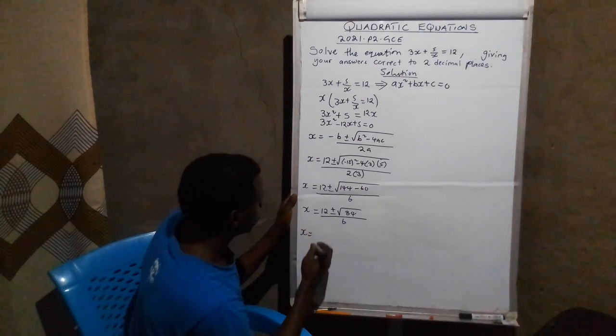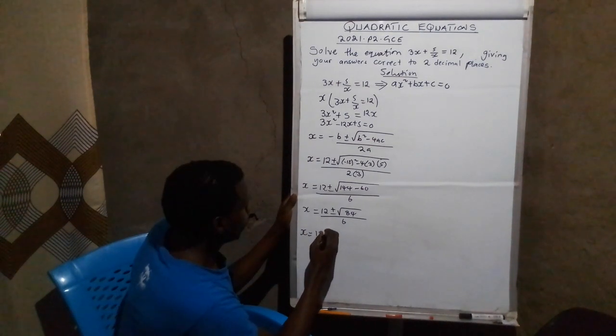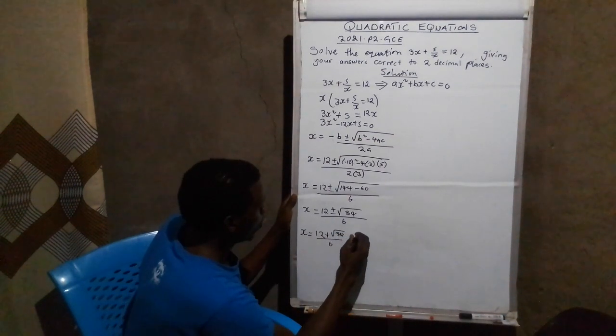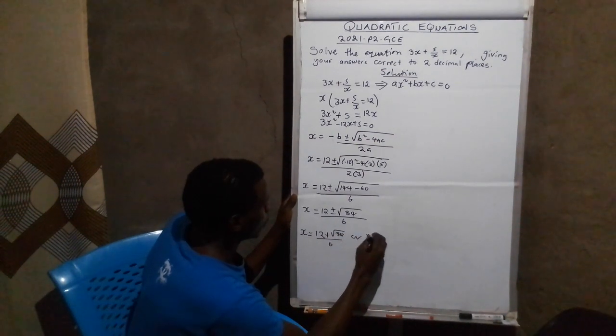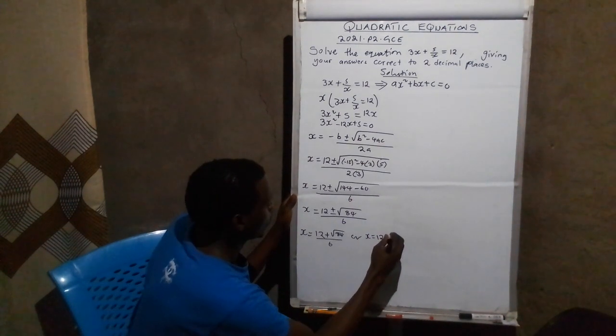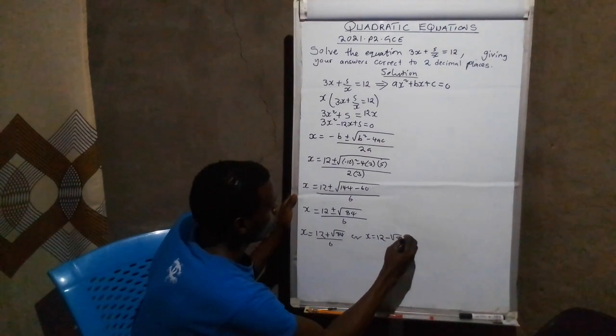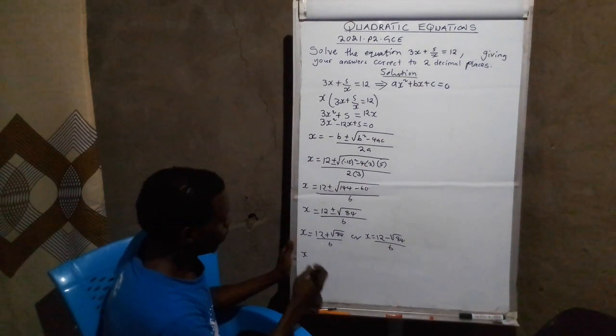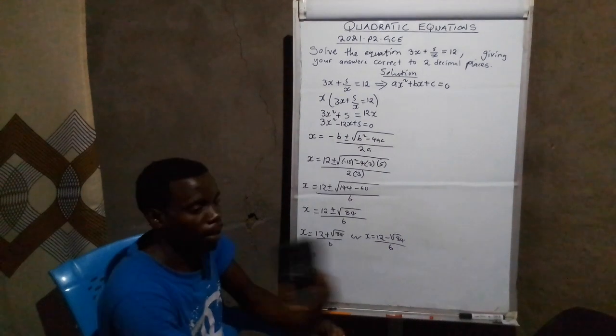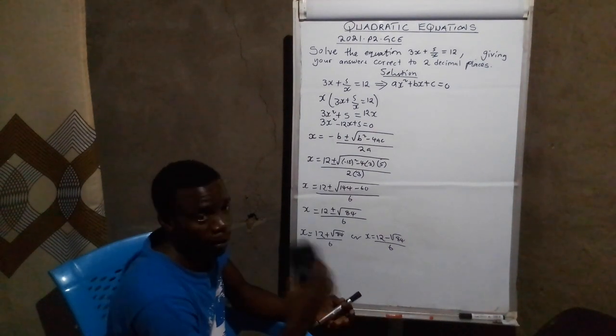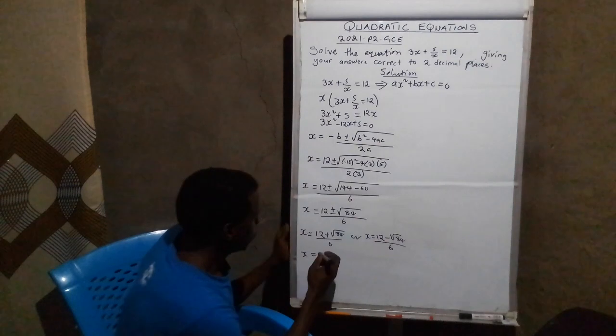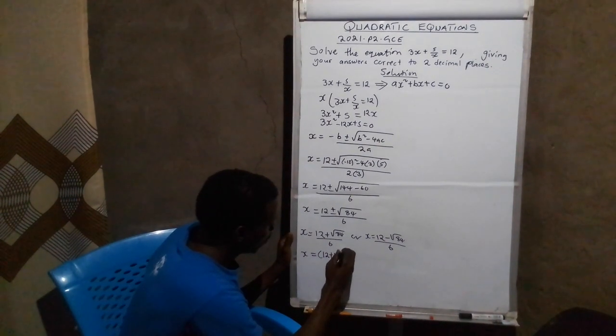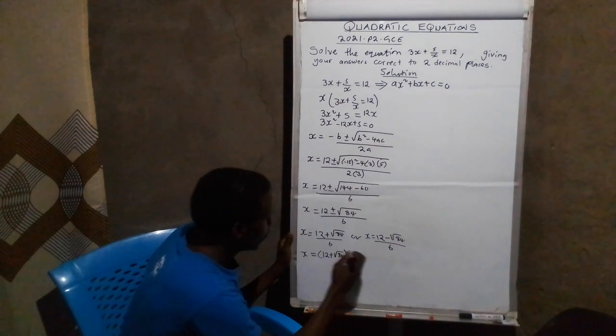This is x equals to 12 plus, we go with the positive part, root of 84, everything over 6. Or x equals to 12, we go with the negative part, minus root of 84 over 6. From there, you get your scientific calculator. What you do, you say open brackets, 12 plus root of 84, close brackets, divided by 6.